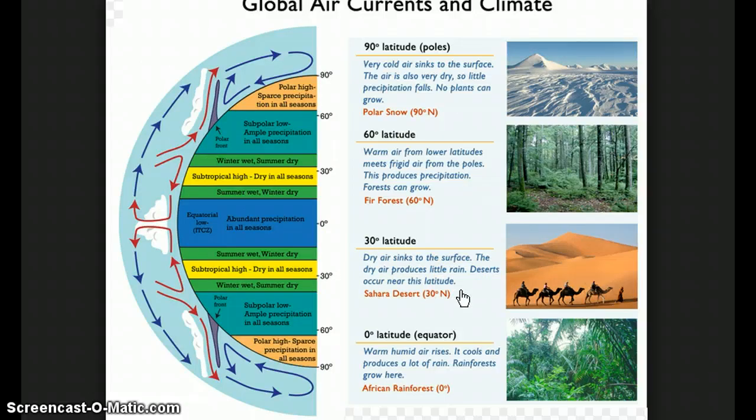One example is the Sahara Desert, which occurs at 30 degrees north latitude. The desert that makes up the southwest United States, Arizona, New Mexico, that area is also at about 30 degrees north latitude.